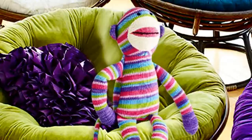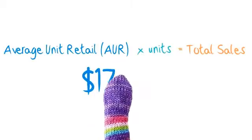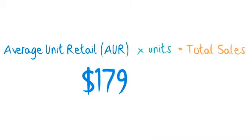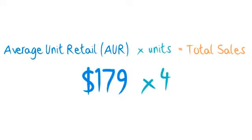Let me show you. Allow me to demonstrate. The total retail price for the base, the frame, and cushion is $179. You multiply that by four, which is the total number of chairs we've sold, and voila! You have your total sales!